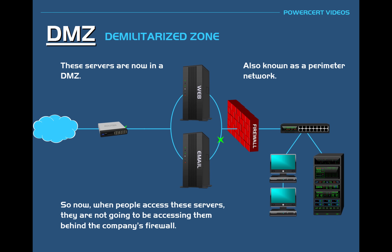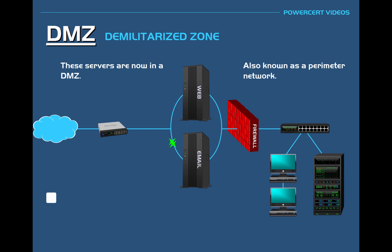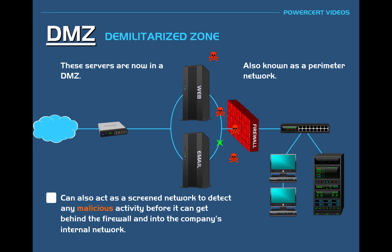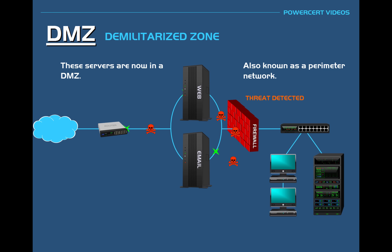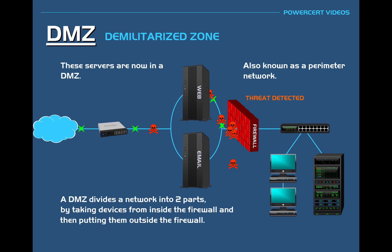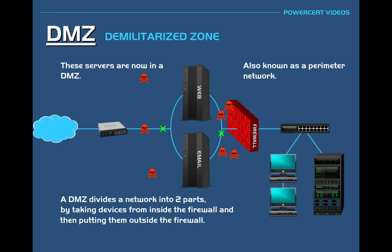This perimeter network can also act like a screened network to detect any malicious activity before it can get behind the firewall and into the company's internal network. So a DMZ divides a network into two parts by taking devices from inside the firewall and putting them outside the firewall.